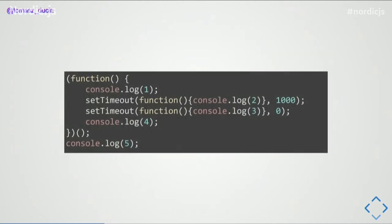Let's look at this example with five console logs and think about the order of execution. One is definitely first. Then four, five, three, two. The immediately invoked function expression is invoked immediately — synchronously. So we step into the function, do console.log one, register both callbacks, go to console.log four, exit the function, and call console.log five. That's the first message, showing how the run-to-completion rule works: nothing can interrupt a running piece of code until it completes.